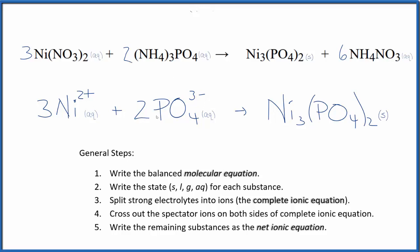You can see that the atoms are balanced, and the charge is balanced as well. Three times two plus, that's six plus. Two times three minus is six minus. Net charge of zero in the reactants. This is neutral, net charge of zero.